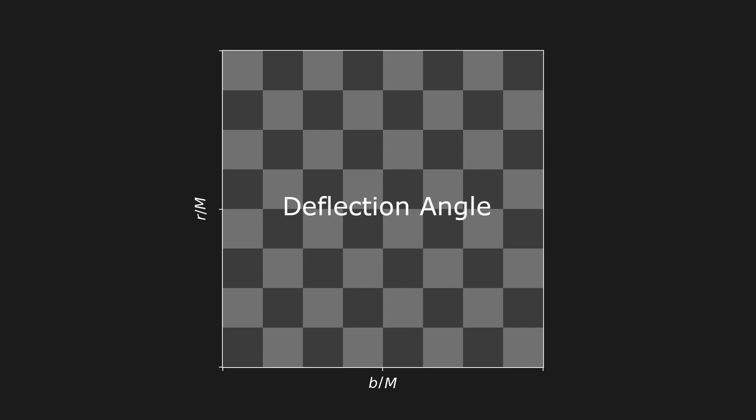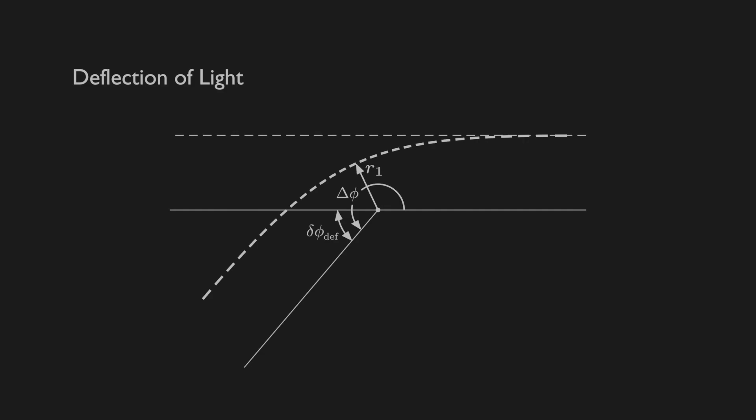The precise way in which b over m and r are encoded into the pixel coordinates is very important, but we'll discuss that after we go through the math. If you don't care about math or don't have the mathematical background to follow along, you can just skip ahead. We'll start with our schematic of a light ray orbit. Let's say our camera is here at a distance rc. We can draw a tangent line here. This angle, let's call it alpha, is what we need to know, because this is a correction for the camera position. The actual deflection angle of the light ray is delta phi def minus alpha.